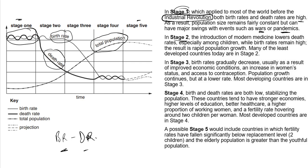When you go to stage two, there is still a high birth rate, but the death rate begins to decrease, so the rate of population growth begins to increase. The introduction of modern medicines lowers death rates, especially among children, while birth rate remains very high. This results in rapid population growth. Many of the least developed countries today are in stage two.